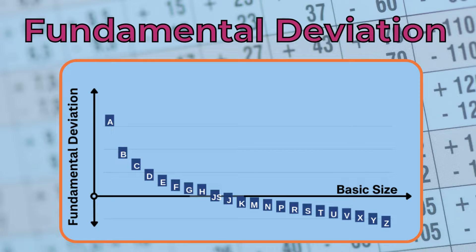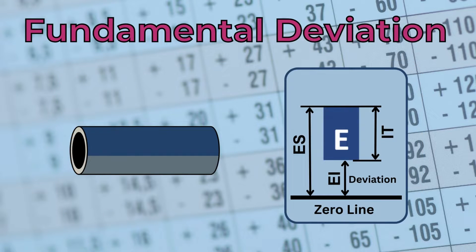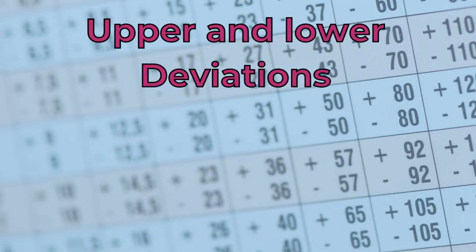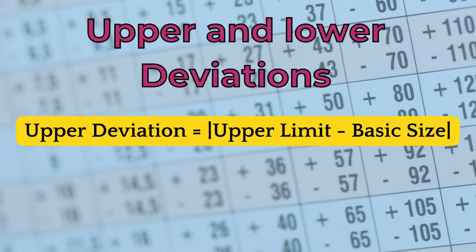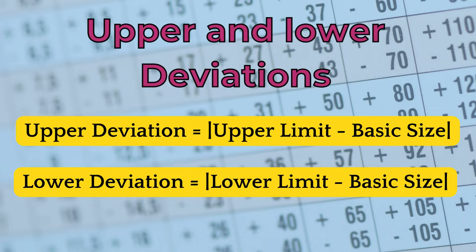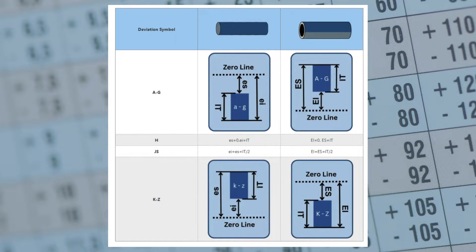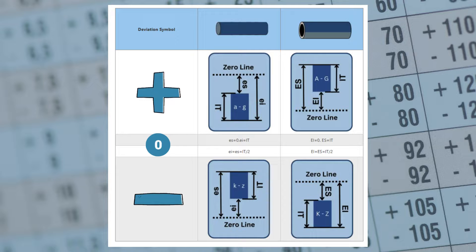The fundamental deviation is the position of the tolerance zone in relation to the zero line. A one or two character letter code is used to indicate it. Capital letters are used for holes; small letters are used to denote shafts. The algebraic difference between the upper limit and the basic size is called the upper deviation, and the algebraic difference to the lower limit is called the lower deviation. The configurations may be confusing and depend on whether the feature is external or internal, and if the deviation is negative, positive, or zero. The details are outside the scope of the video.